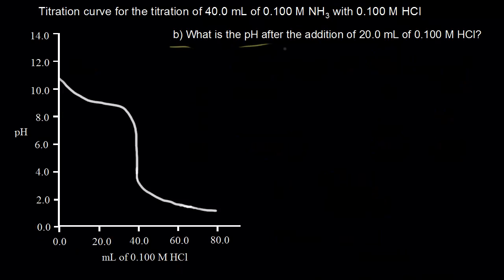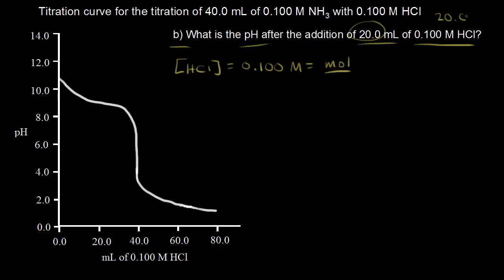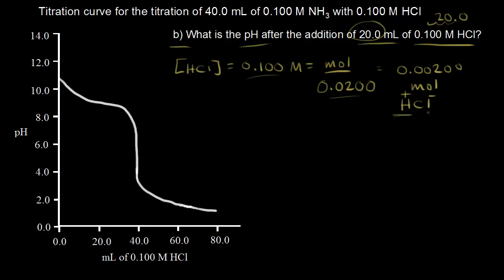For part B, what is the pH after the addition of 20 milliliters of 0.1 molar HCl? The concentration of HCl is 0.1 molar. Since molarity is moles over liters, and we're adding 20 milliliters (0.02 liters), we get 0.1 times 0.02 equals 0.002 moles of HCl. You can think of HCl as H+ and Cl⁻, or H3O+ in water — so this is 0.002 moles of H3O+ being added.